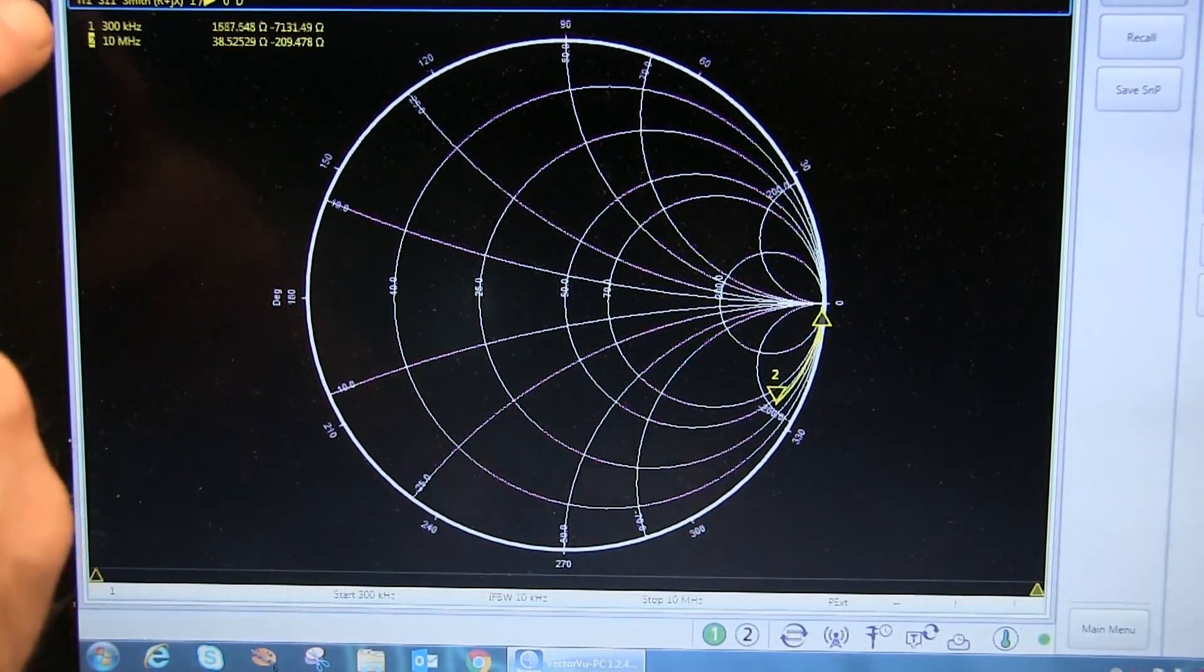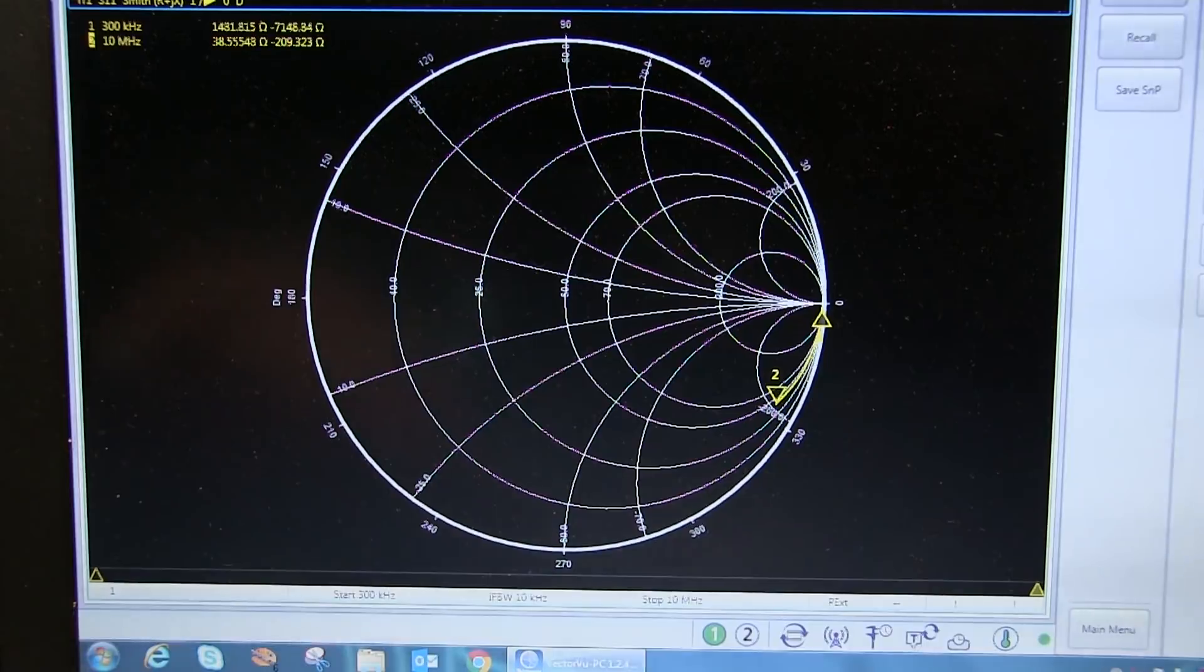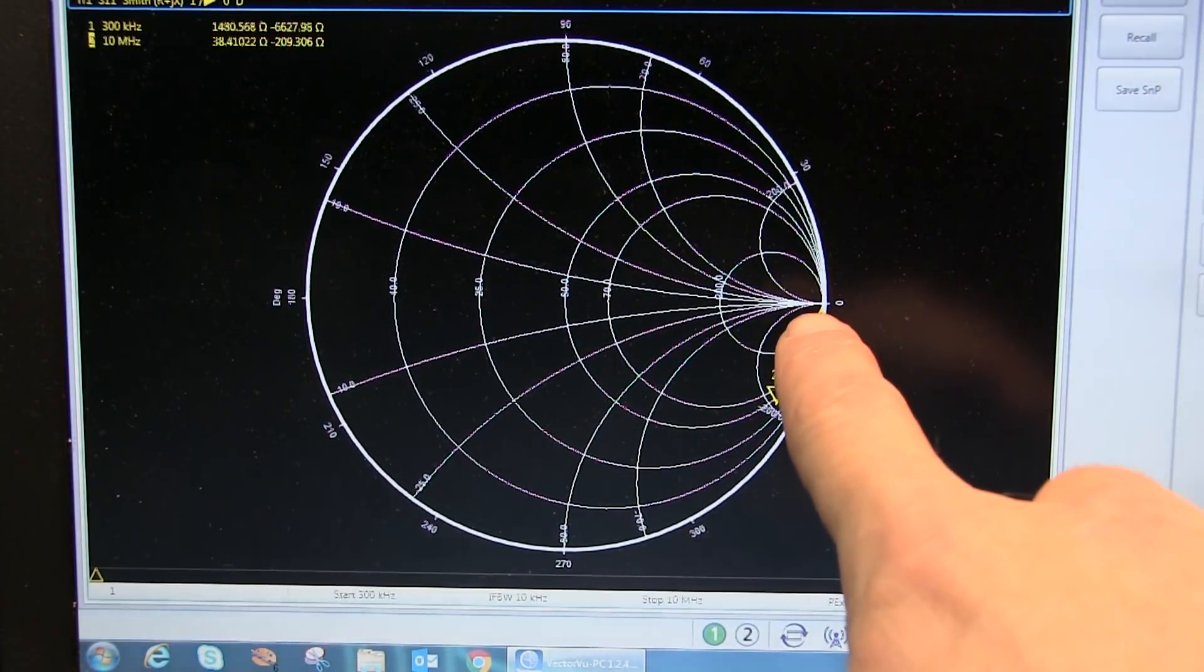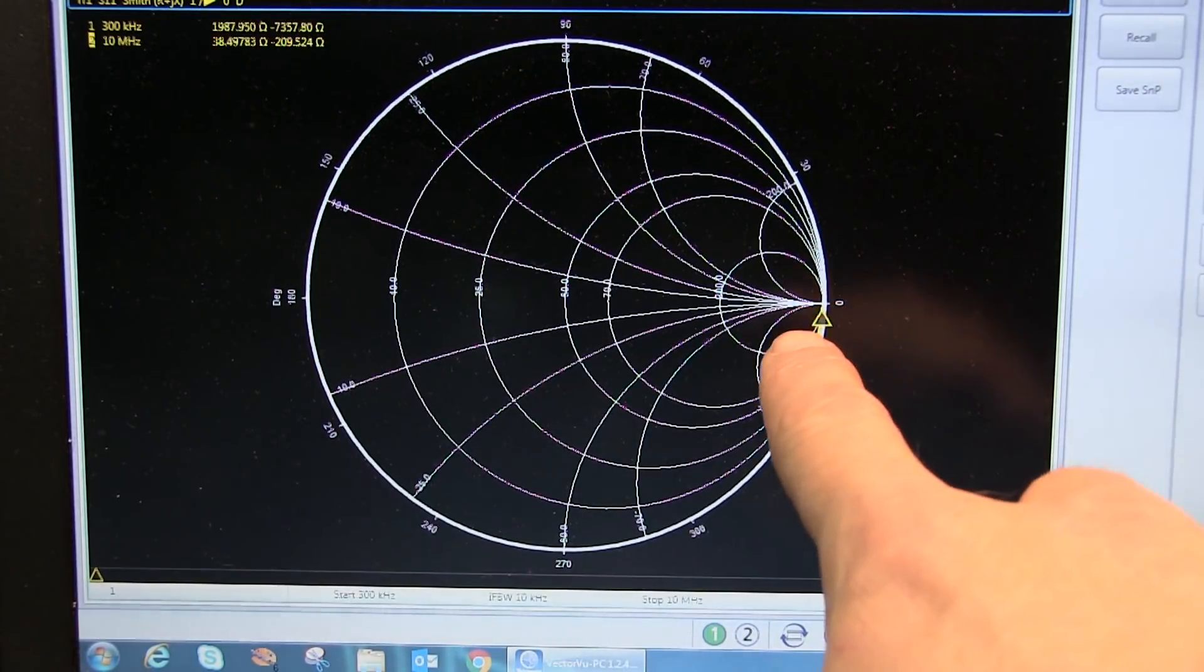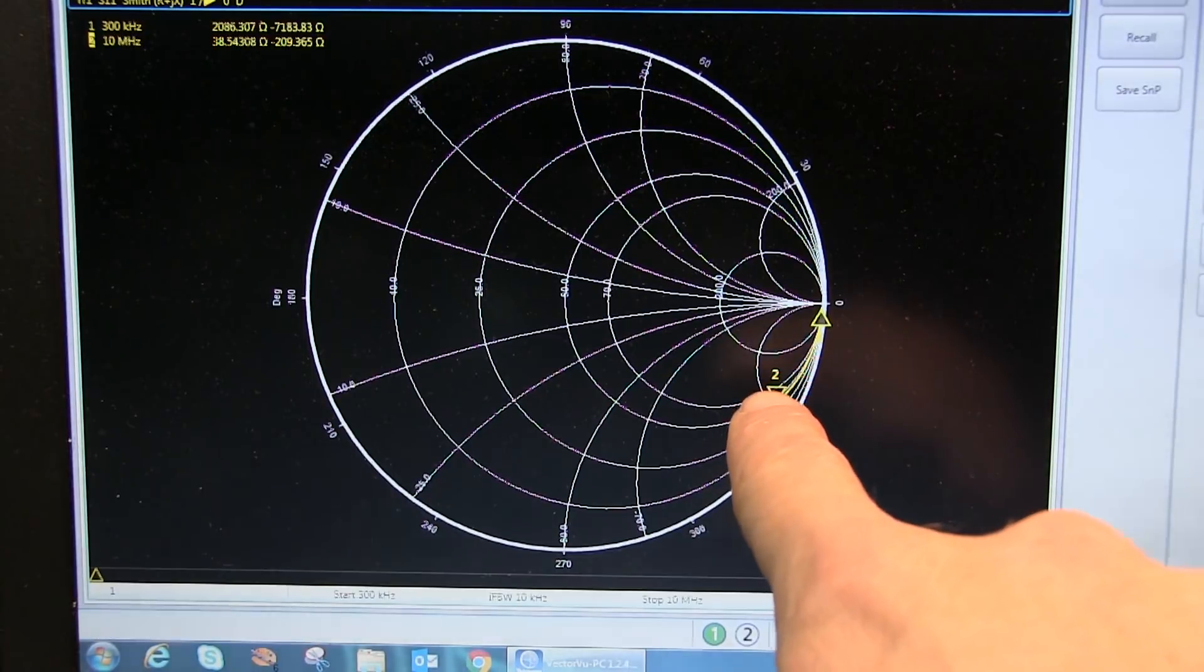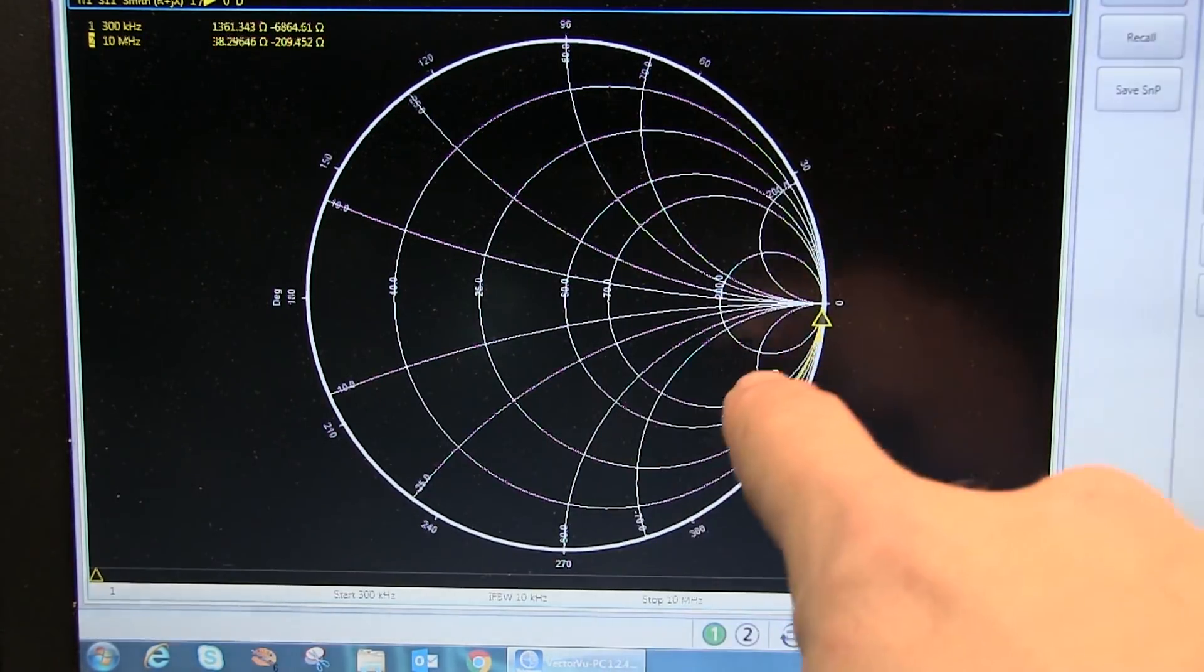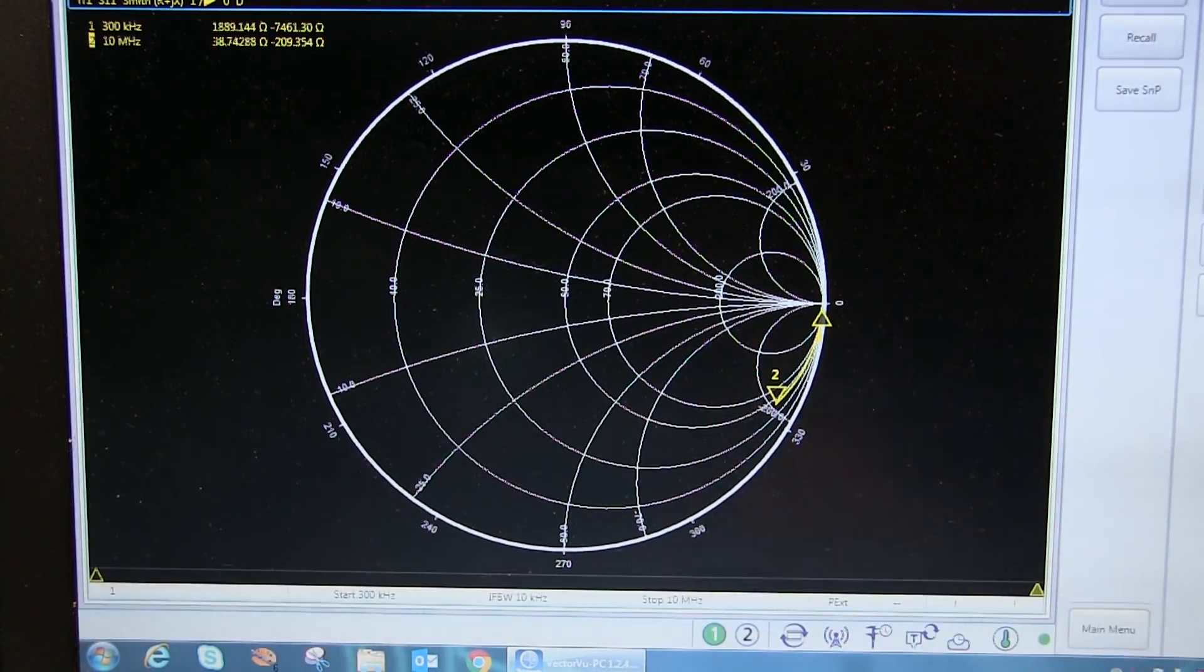I'm sweeping frequency from about 300 kilohertz to 10 megahertz. I've got the capacitor dialed to its minimum value, which is on the order of 70 to 80 picofarads. So we can see at 300 kilohertz, we're looking very close to an open circuit, because the capacitive reactance is quite high, so we don't even see that 50 ohm load. At 10 megahertz, the impedance is actually getting lower, because at 10 megahertz, 70 picofarads is reasonable, it's a couple hundred ohms.